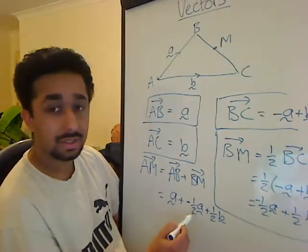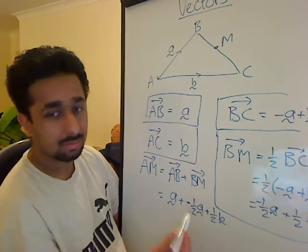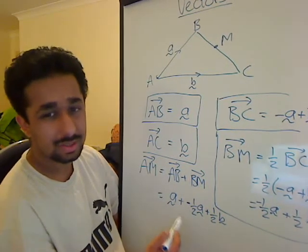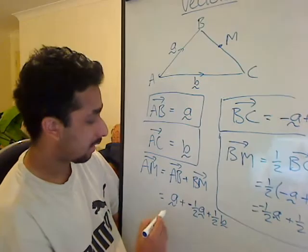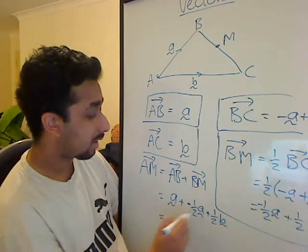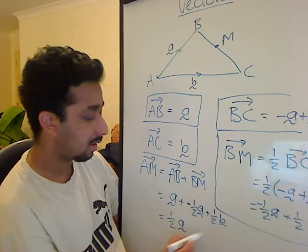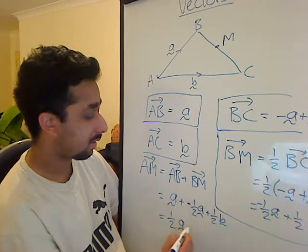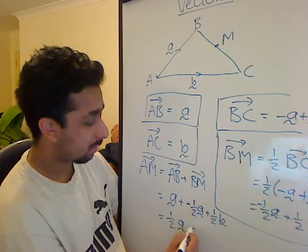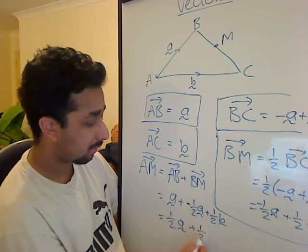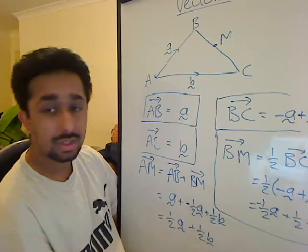Right. A minus half A. Well, A plus half... A plus minus half A just means A minus half A. A minus half A is just half A. Plus half B. There's nothing else. There's no other B's to go with that. Plus half B. And we're done.